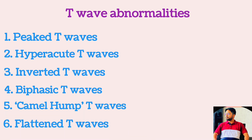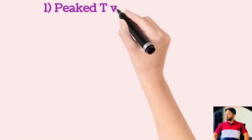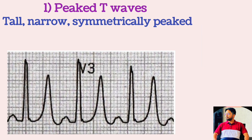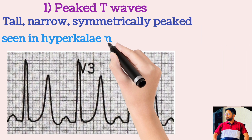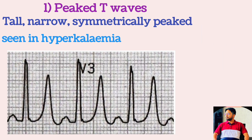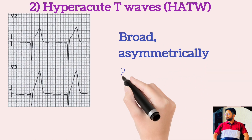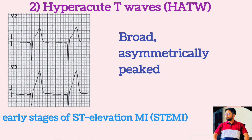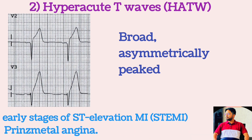Peaked T-waves are tall, narrow, symmetrical, and usually seen in hyperkalemia. Hyperacute T-waves are broad and asymmetrically peaked, seen in the early stage of STEMI. They are also seen in Prinzmetal angina.